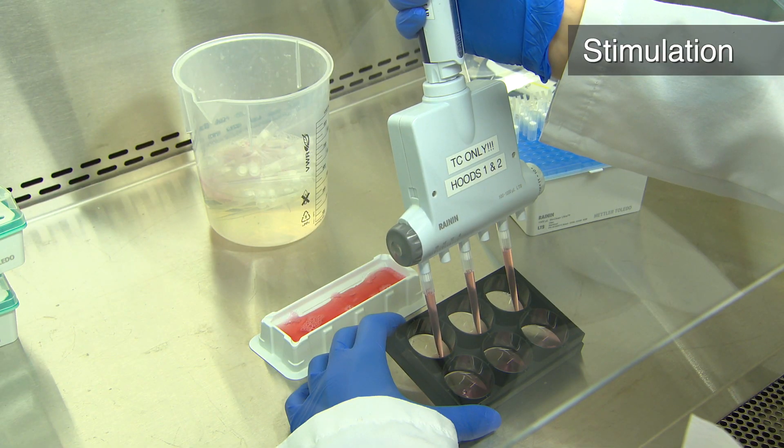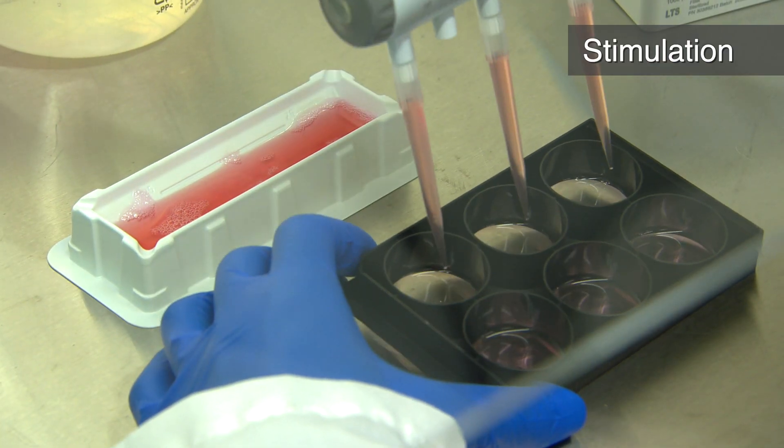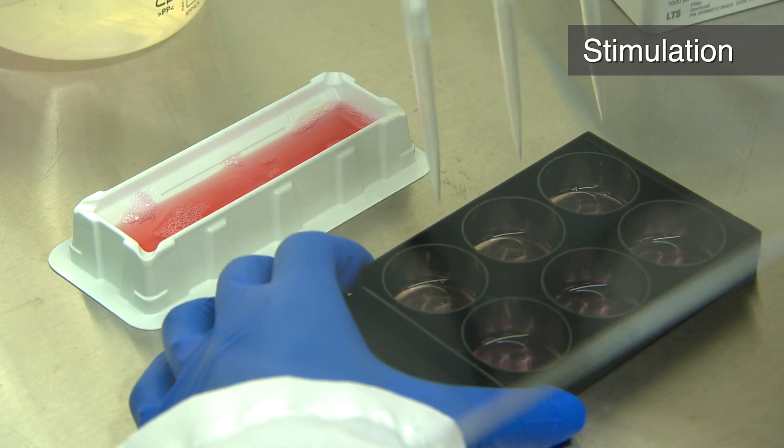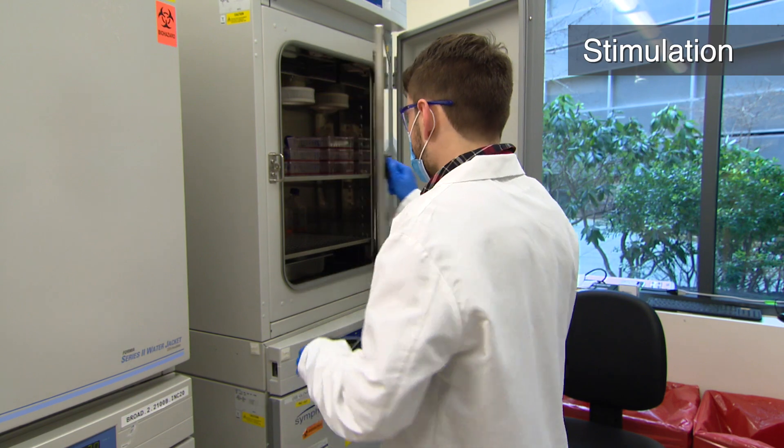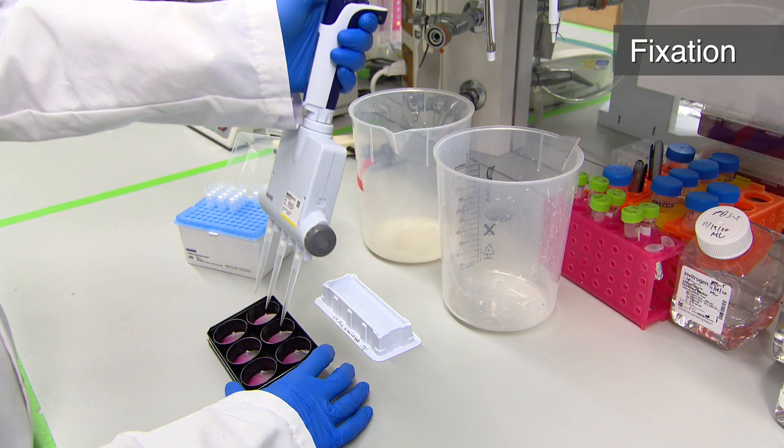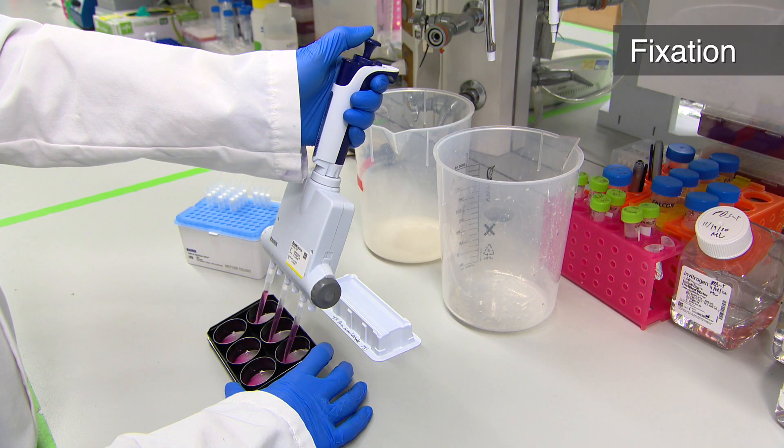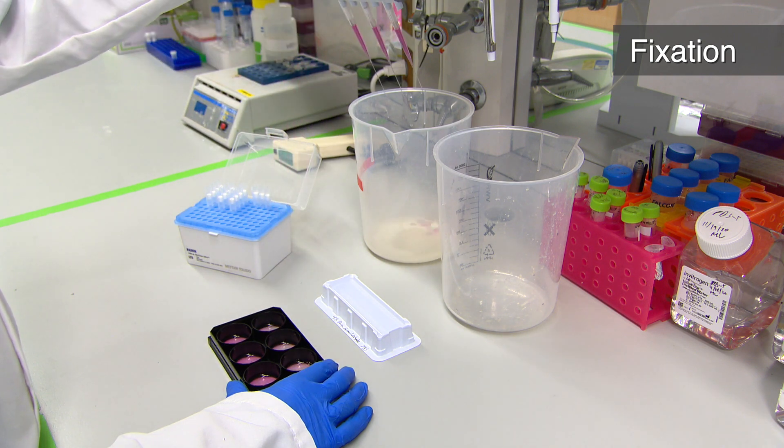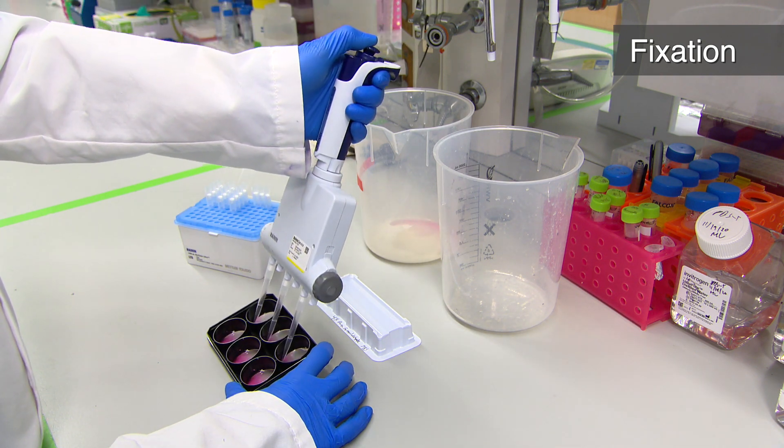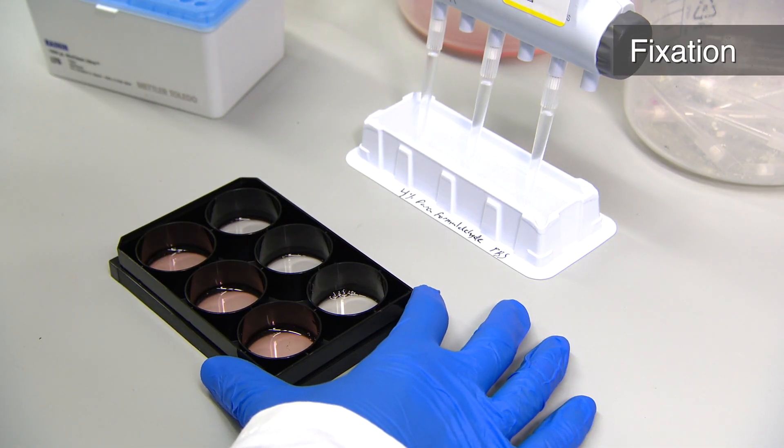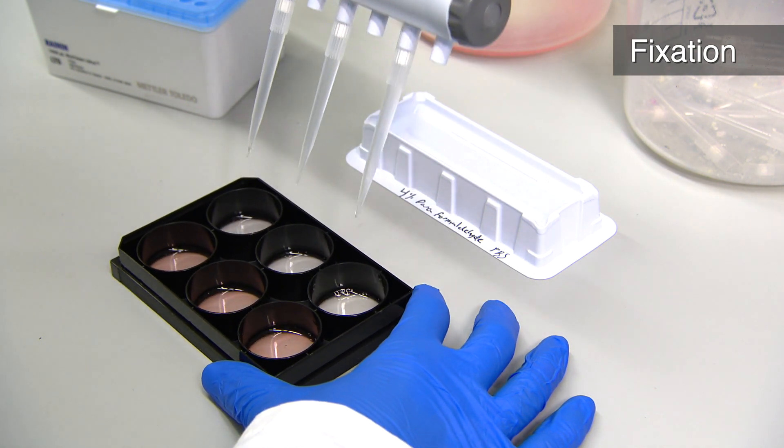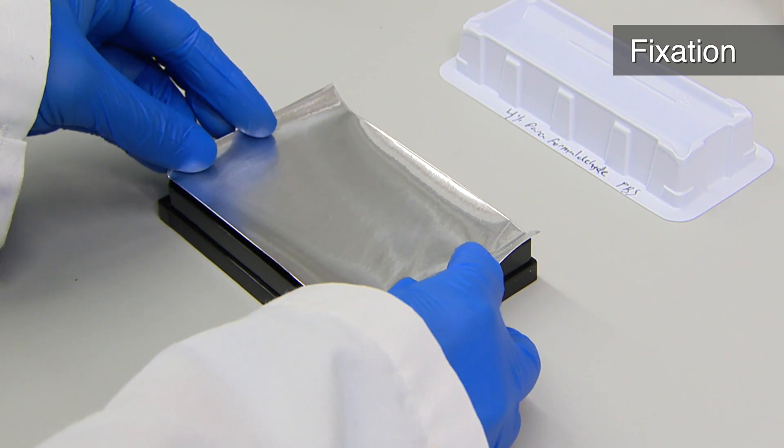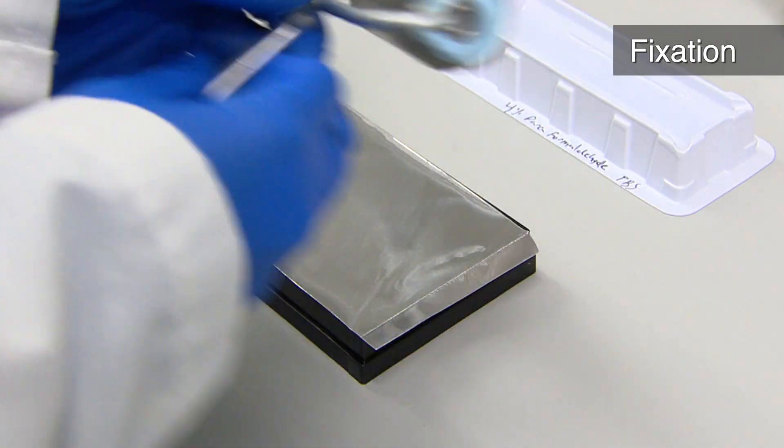Next, remove the media, stimulate cells with 2 milliliters media containing either TNF-alpha or IL-1 beta and incubate at 37C for 40 minutes. Remove media and fix with 4% paraformaldehyde in PBS for 30 minutes at room temperature. When adding liquids to the plate, pipette gently against the side of the well to avoid displacing the cells. When finished, cover the plate with a foil lid to shield from unwanted debris.